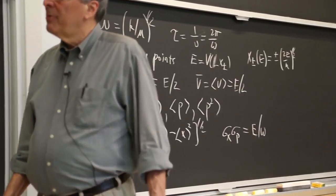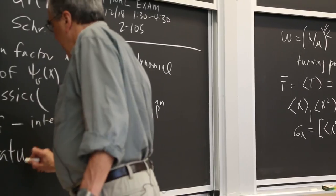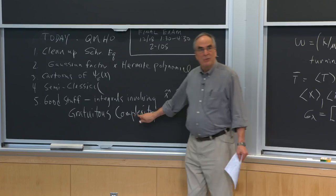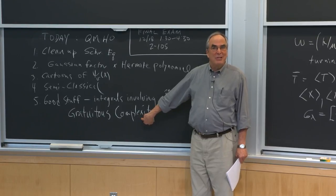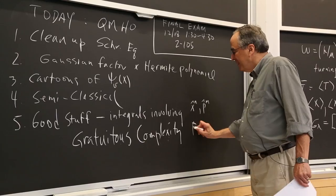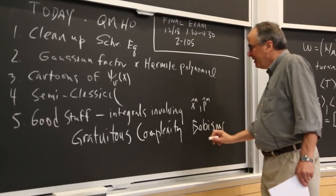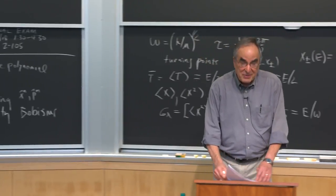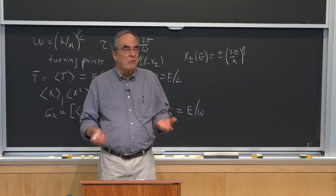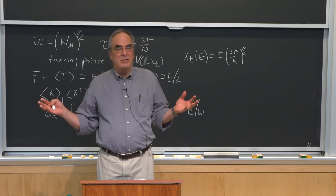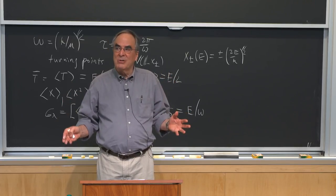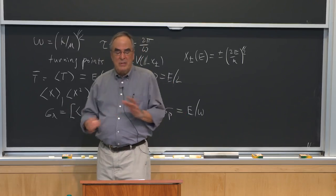Today's menu is what I would call gratuitous complexity — that's one of my favorite Bob-isms. What I want you to be able to do for a lot of quantum mechanical problems is to know the answer, or know what things look like, without doing a calculation — in particular, not solving a differential equation or evaluating any integrals. You want to be able to draw these pictures instantly.